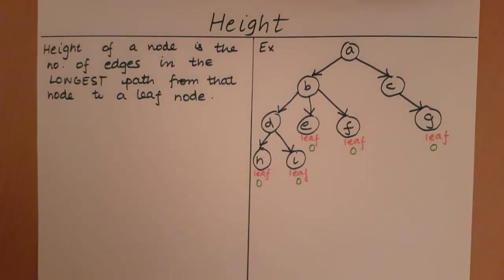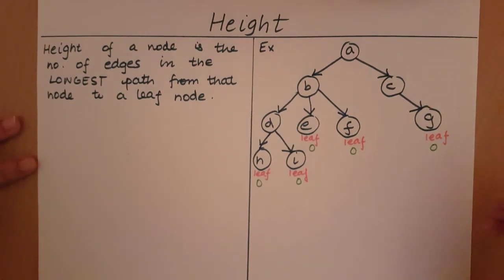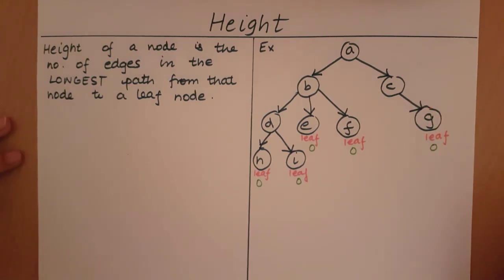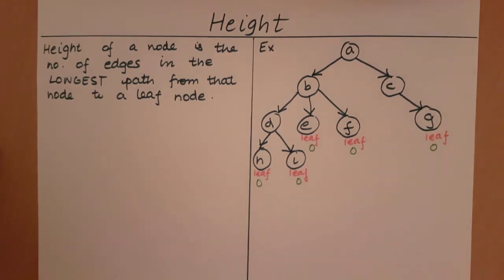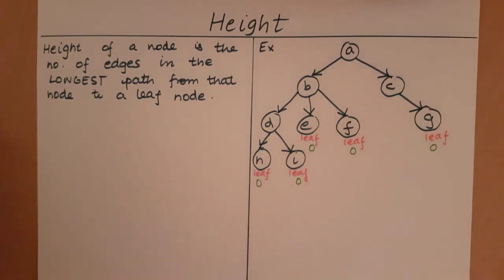A leaf node cannot travel to any other leaf node but itself. We need to go from this node to a leaf node — the only leaf node it can travel to is itself. There are 0 edges in that path. So the height of a leaf node is going to be 0.